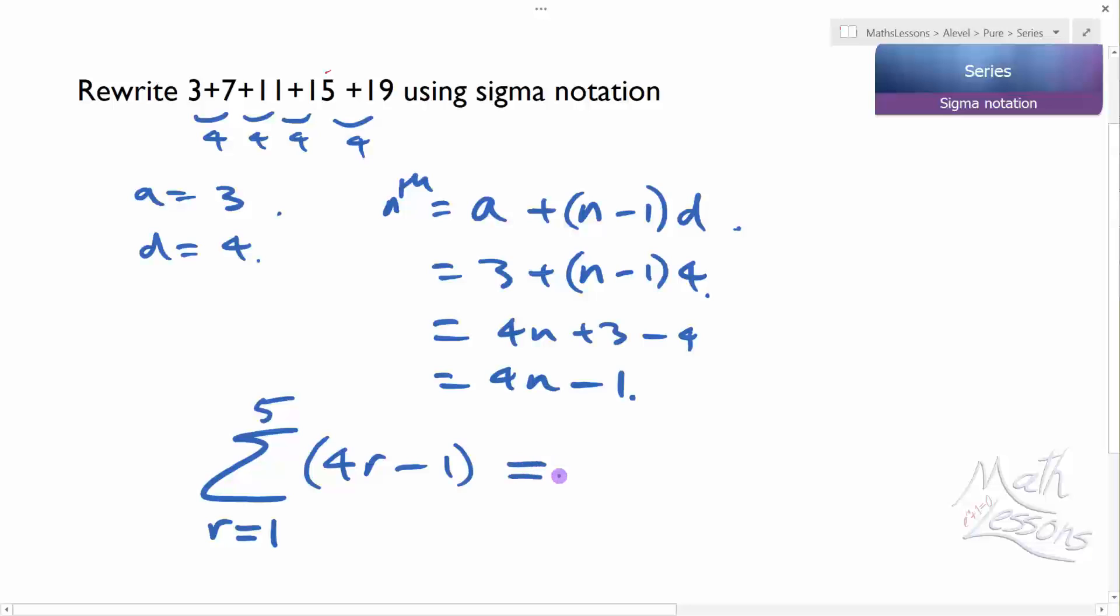Let's just check that I got it right. Put r equals 1 into this, I get 4 minus 1. Next one, put 2 into that, I get 4 times 2 minus 1. And what I can see is I've got 3 plus 7. And I can see it's going to go up by 4 every single time. So what I've done is correct.